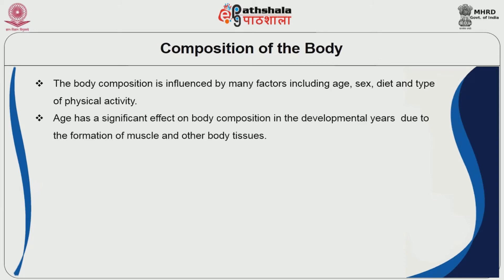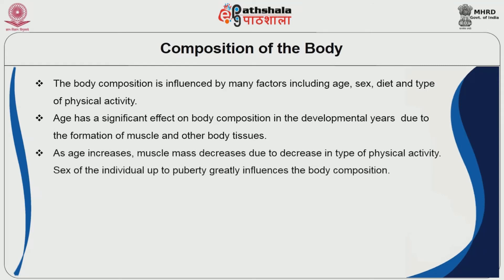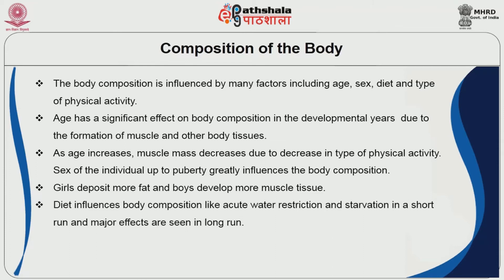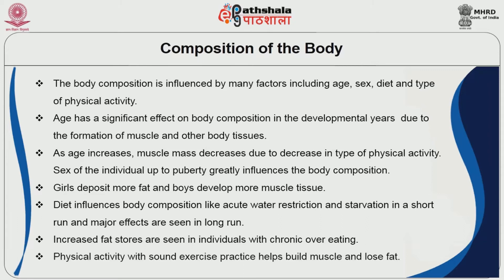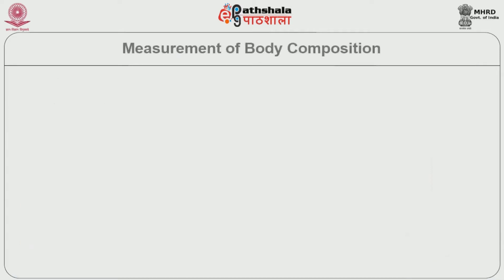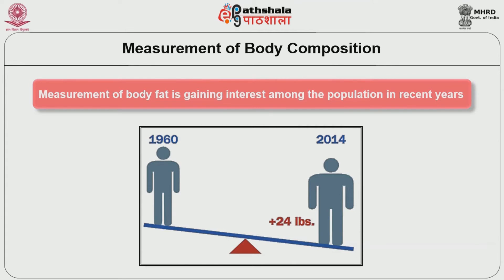Age has a significant effect on body composition in the developmental years due to the formation of muscle and other body tissues. As age increases, muscle mass decreases due to decrease in physical activity. Sex of the individual up to puberty greatly influences the body composition; girls deposit more fat and boys develop more muscle tissue. Diet influences body composition — acute water restriction and starvation in the short run, and major effects are seen in the long run. Increased fat stores are seen in individuals with chronic overeating. Physical activity with sound exercise practice helps build muscle and lose fat.